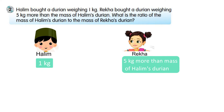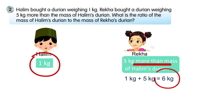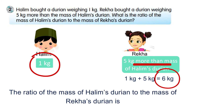First, find the mass of Reka's durian. Since Reka's durian is 5 kg more than Halim's, we calculate 1 kg plus 5 kg, so the mass of Reka's durian is 6 kg. Now write the ratio: the mass of Halim's durian is 1 kg and the mass of Reka's durian is 6 kg, so the ratio is 1 to 6.